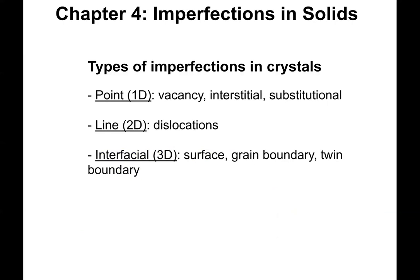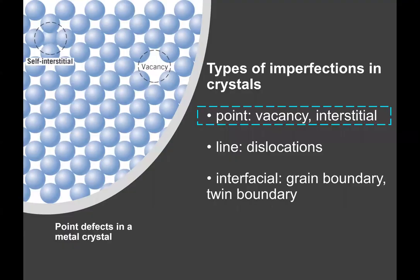Alright, so there's three classes or levels of imperfections that we can talk about. There's the one-dimensional, two-dimensional, and three-dimensional in terms of their extent, referred to in your text as point defects, line defects, and interfacial or surface-type defects. Okay, so we'll go through each of these types in order. So we'll go ahead and take a look at the point defects. The vacancy and the interstitial will be the two main categories, and then we'll take a look at a few others.